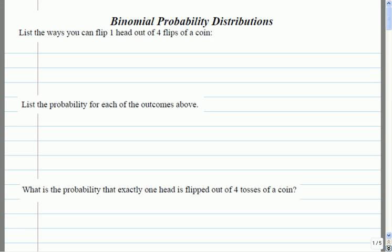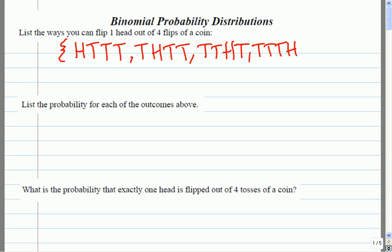So list the ways that you can flip one head out of four coin tosses. So for example, if you were to do this and end up with one head, you'd have, for example, head, tail, tail, tail. Another one could be tail, head, tail, tail, and finally three tails and a head.